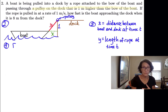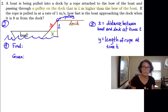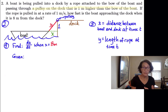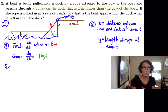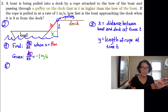In step four, we need to write down derivatives. We're given a derivative and we're asked to find a derivative. We're asked to find dx/dt when x is 8 meters — the rate at which the boat is approaching the dock when it's exactly 8 meters from the dock. x is the distance between the boat and the dock. What we're given is dy/dt, and that's negative one meter per second because y, the length of rope, is decreasing as a function of time, so the derivative is negative.